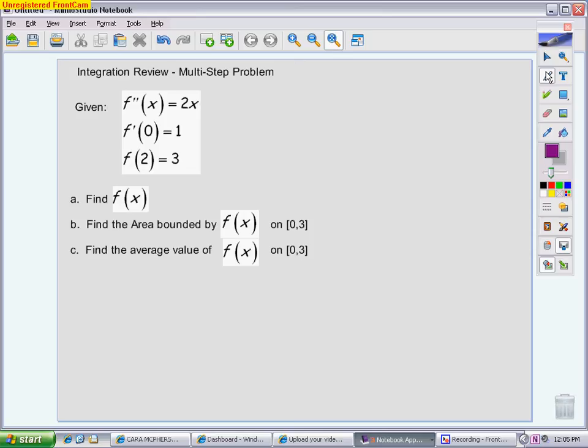What you have here is they're giving you several pieces of information. They're giving you a second derivative, an initial condition of the first derivative, and of the original function. Part A is just asking to find the function. So we know we have to work backwards within our integration.